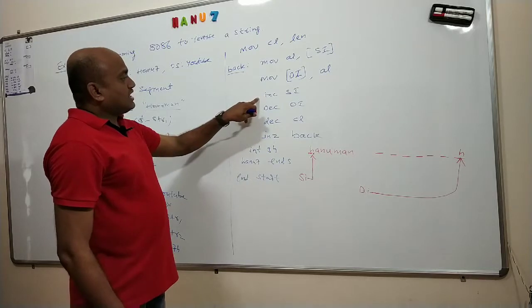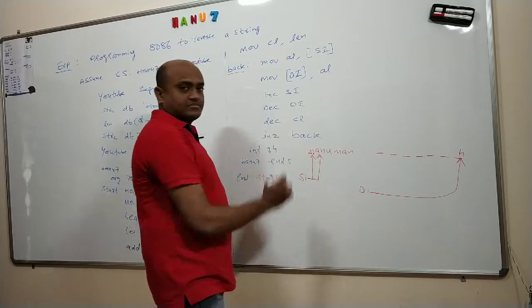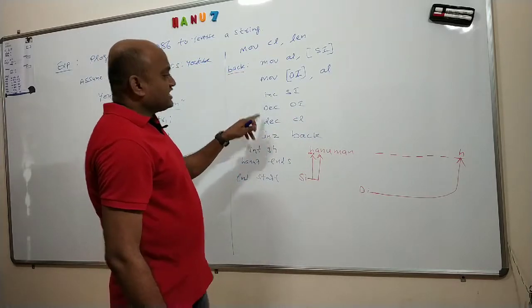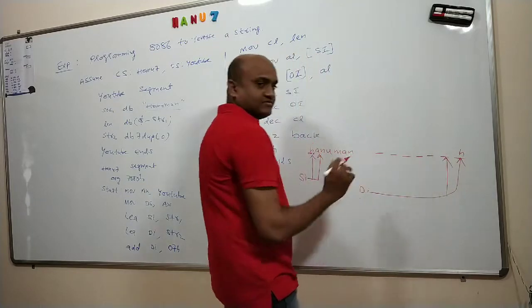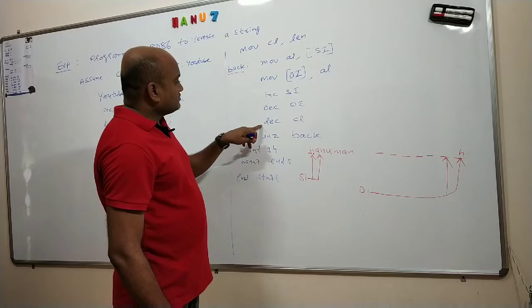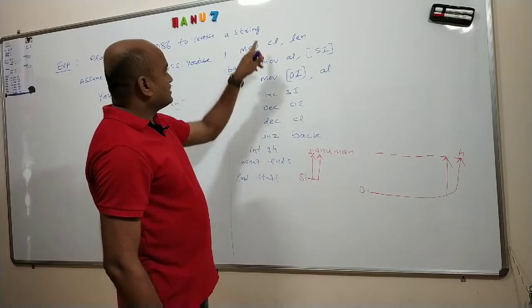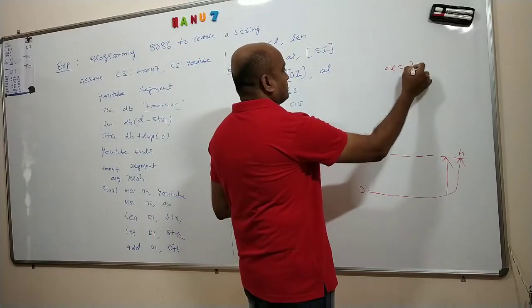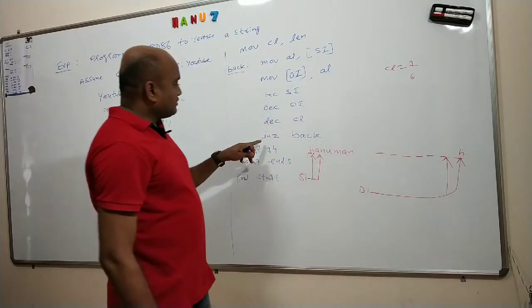Then I am incrementing SI. SI is incremented. Then I am decrementing DI. DI is decremented. I am doing one more step: decrement CL. CL was initially 7. I am decrementing CL. This will become 6 now. I am checking.